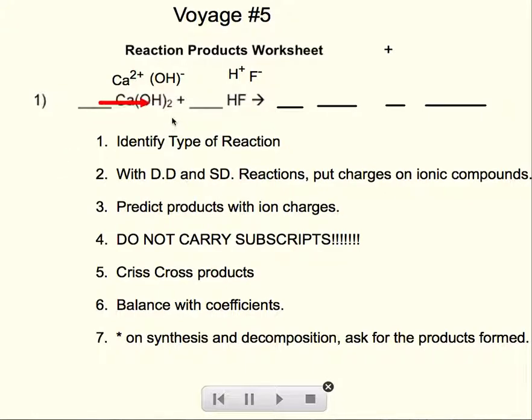So when you predict the products, you just rearrange the cation with the other anion. I like to think of it as inside with inside, hydrogen with hydroxide, and calcium with fluoride.